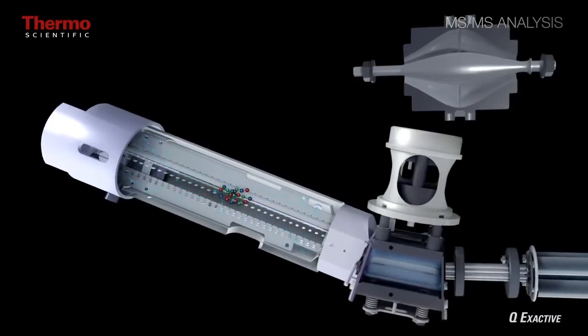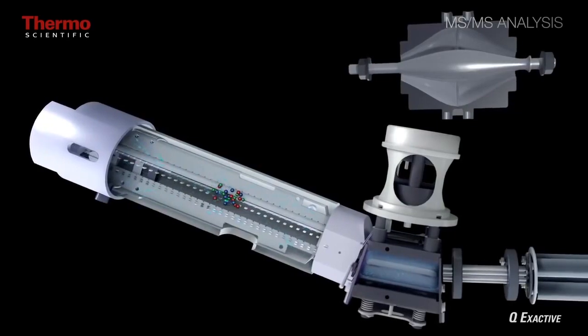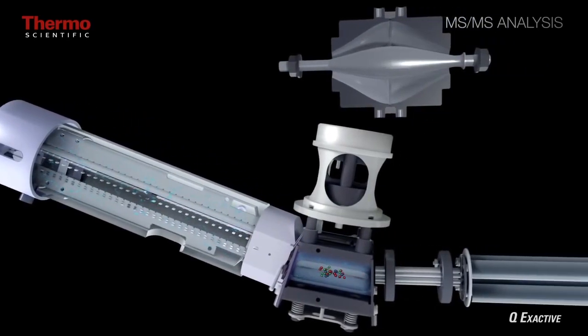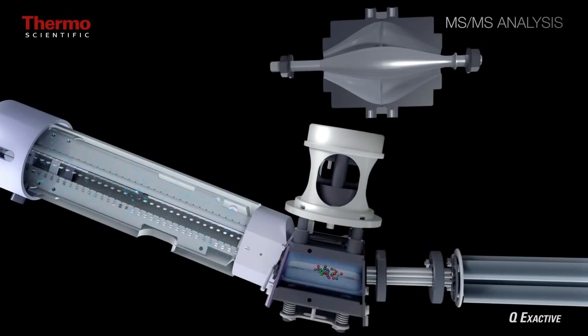Fragment ions are then collected into packets in the C-trap. They are stabilized and sent to the orbitrap for detection.